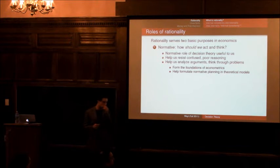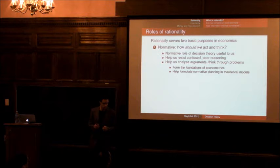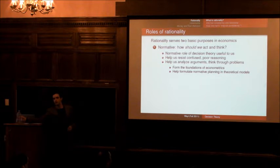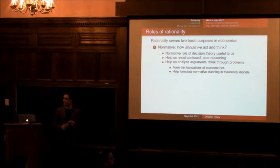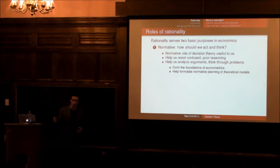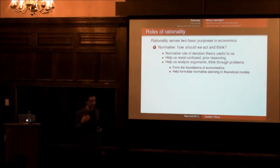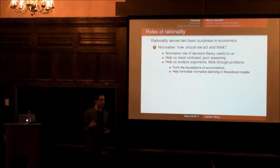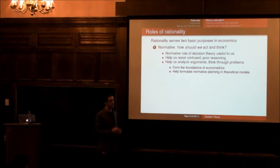It also helps us when we write down, say, the planning problem of a social planner. We want that social planner to obey the rules of decision theory if we think that's a normatively compelling way to optimize. So decision theory is useful on the normative end in helping us evaluate arguments and formulate decision problems. Yeah? What do you mean by useful? Is it sort of, like, circular things, like, normative is what is useful and it's useful because it's normative? No, I don't think so, because when I say normative, it's, you know, we have to figure out what it is that we think we should be maximizing.